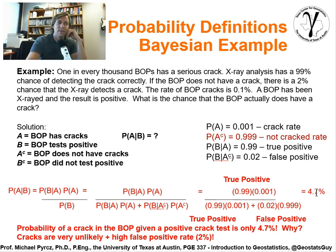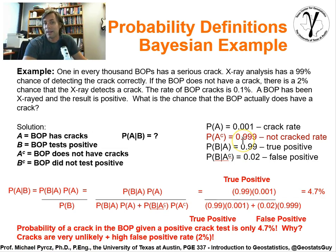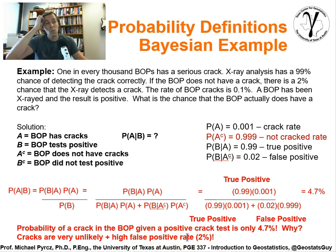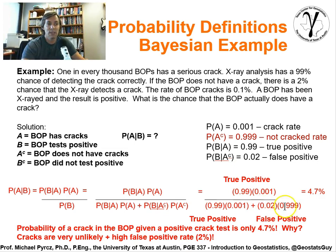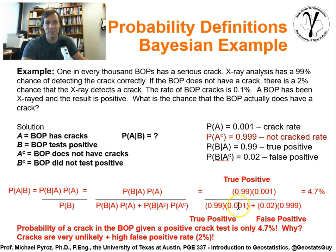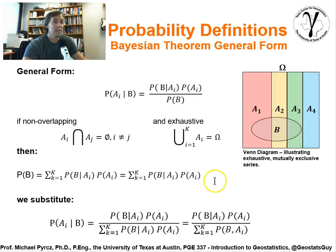Why do we have such a bad result? It's a combination of two things. First, cracks are very unlikely — there's only a 1 in 1,000 chance of a crack. Second, we have a relatively high false positive rate: 2% of the time when there's no crack, we think there's a crack. So the false positive term in the denominator is bigger than the true positive rate term, and it swamps it — it overwhelms it. The result is a very poor test that's not really informing us. We could not have calculated that without using Bayes' theorem.